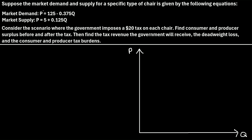The market demand is P, the market price, is equal to 125 minus 0.375Q, the market quantity. And the market supply is given by P is equal to 5 plus 0.125 times Q. Consider the scenario where the government imposes a $20 tax on each chair. Find the consumer and producer surplus before and after the tax, then find the tax revenue the government will receive, the deadweight loss, and the consumer and producer tax burdens.